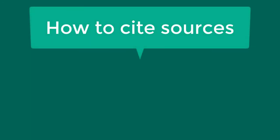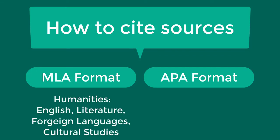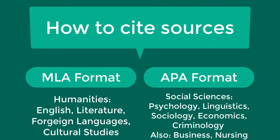When you cite your sources, you will follow the guidelines of a particular citation style, such as MLA or APA citation style. Check your assignment details, the course syllabus, or ask your professor which citation style should be used. Typically, MLA format is used in the disciplines of humanities such as English, literature, foreign languages, and cultural studies. APA format is typically used in the social sciences including psychology, linguistics, sociology, economics, and criminology, as well as in business and nursing.